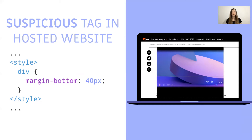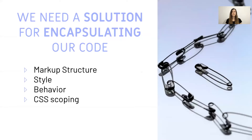As a result, the design of the player looks terrible. So what can we do? We needed a solution for encapsulating our code. We want the player's markup structure, style, and behavior to be isolated from the rest of the page. We want to allow CSS scoping — meaning that the style rules apply only to the player and page styles won't affect it.